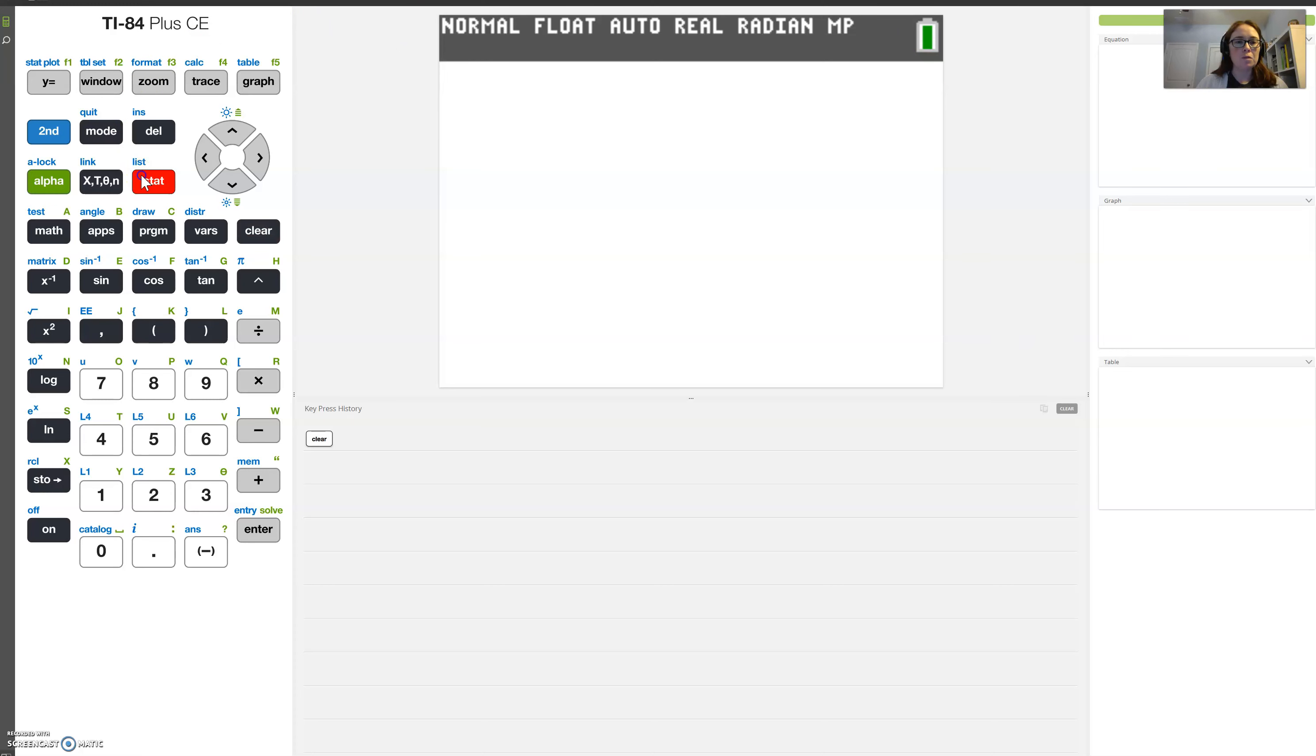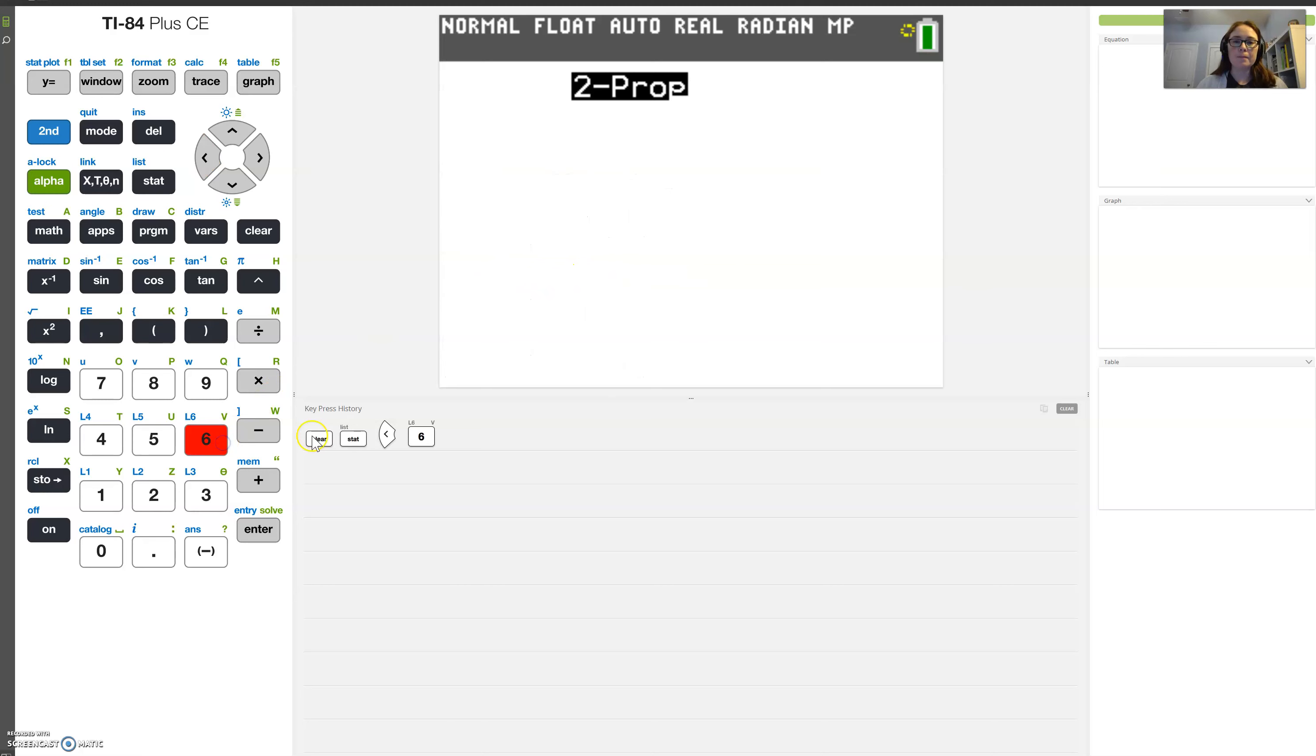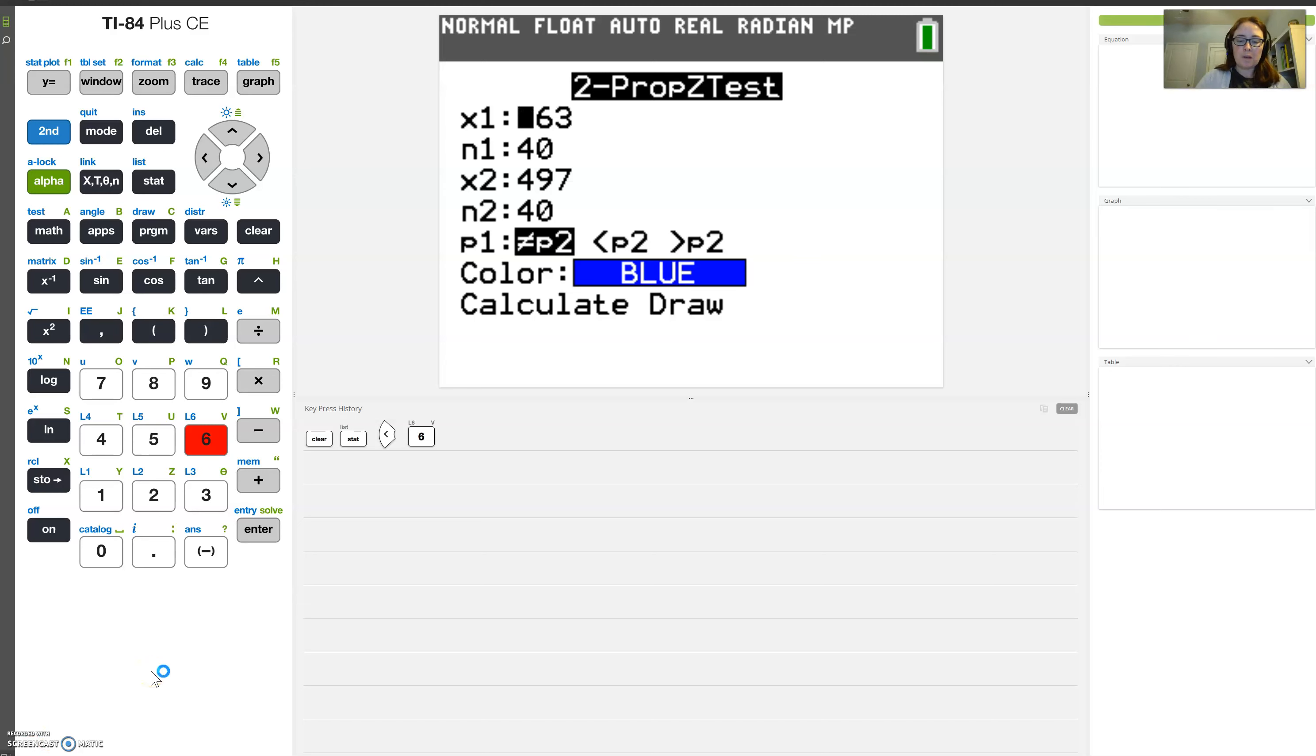So to find the test, I'm going to go stat, and I want to go over to the tests here. That's where my hypothesis tests are, and I'm looking for the two-prop Z-test, which is number six on the list. And now I'm going to start plugging in my information. So for my first sample, it was 2,051. And the sample size was 12,328. And the hypothesis statement was that they were not equal to, so I'm going to leave that first one highlighted and go to calculate.